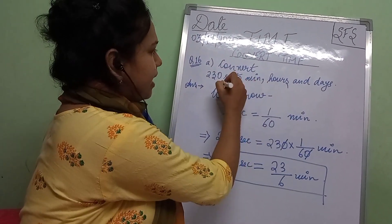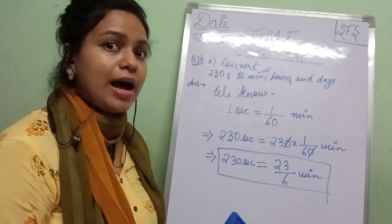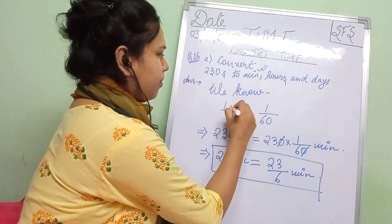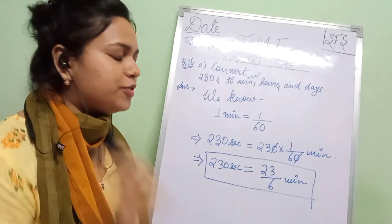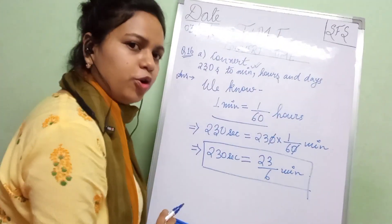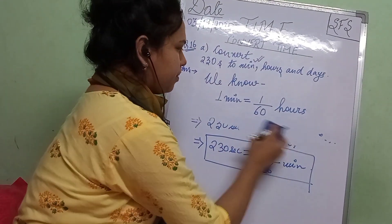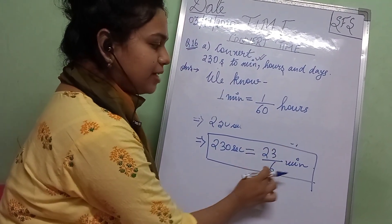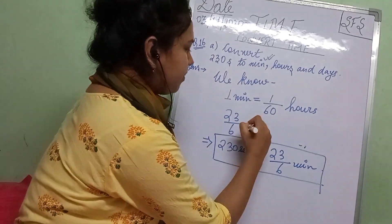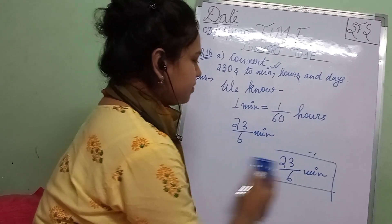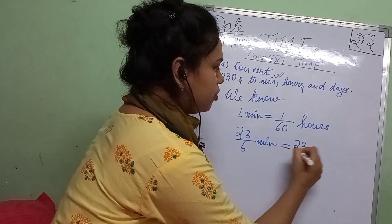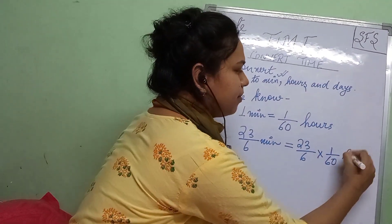Now we have to convert it into hours. We know that 1 minute is equal to 1 by 60 hours. We have to convert 23 by 6 minutes into hours. So 23 by 6 minutes is equal to 23 by 6 into 1 by 60 hours.